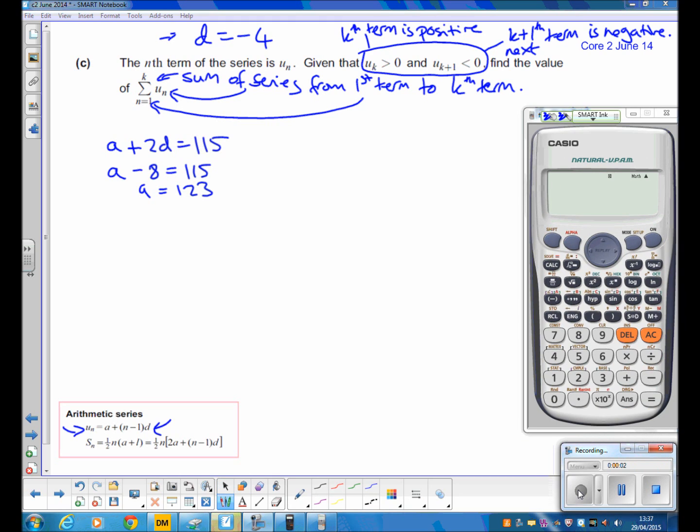So now we've found a is 123, we can write our nth term formula: a plus n minus 1 times the common difference, which is negative 4.